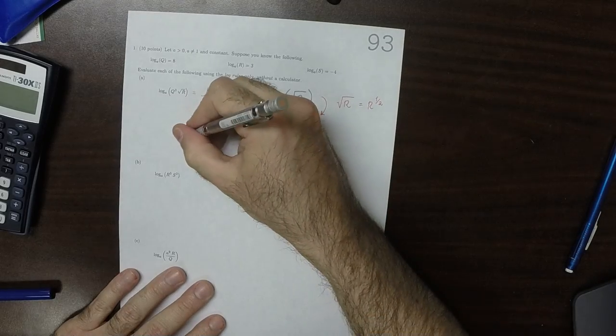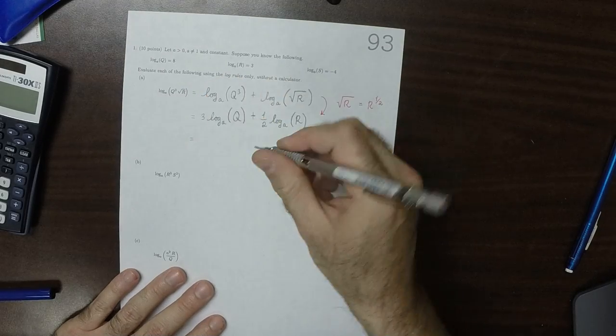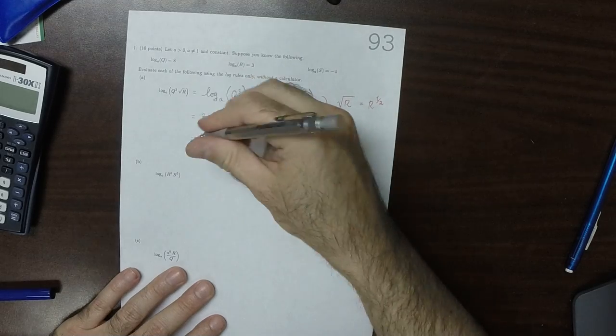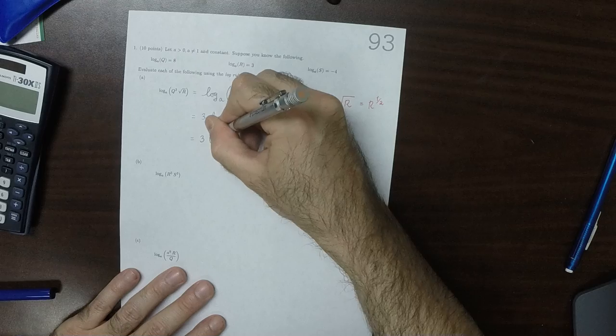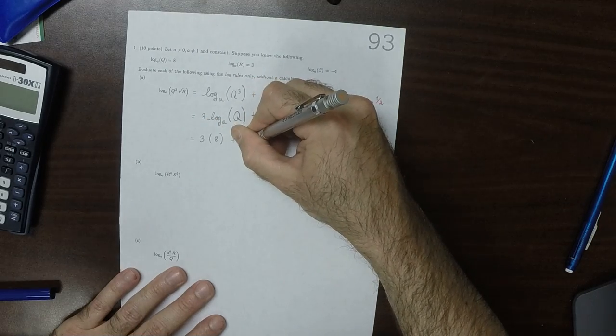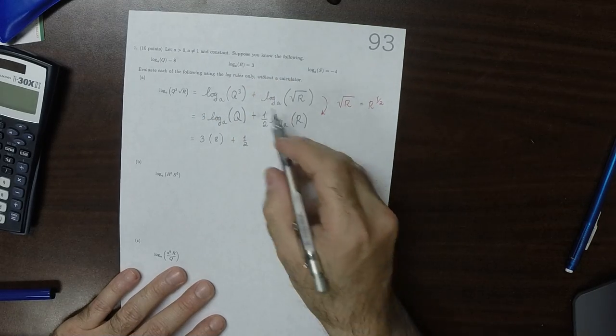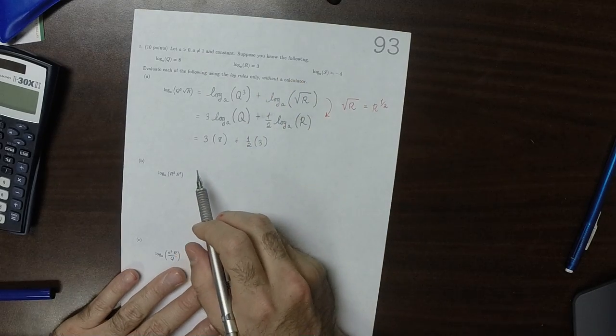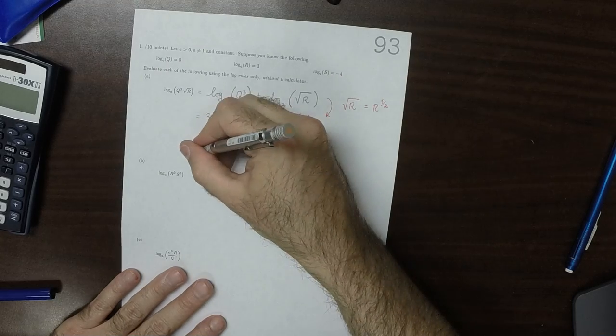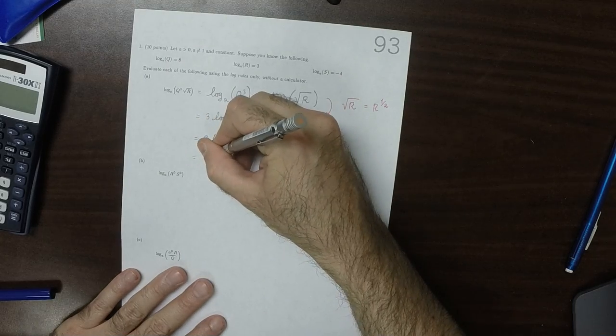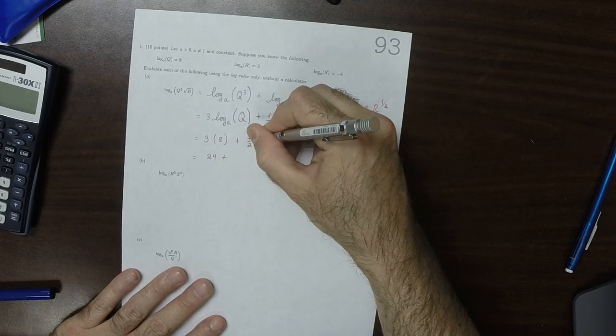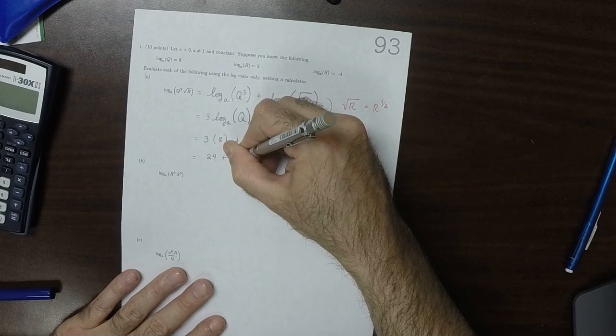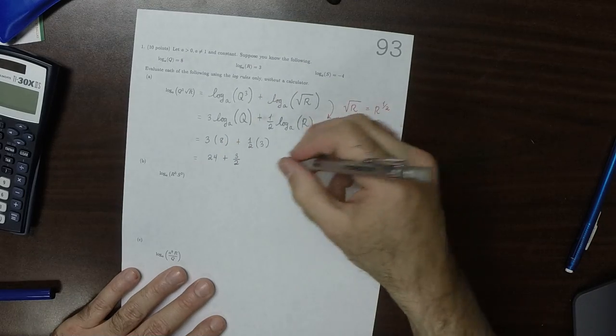But now we know each one of these individual components, so then that's 3 log base a of q is 8, and then plus half. Log base a of r is 3, so that's 24 plus 3 halves. So plus 1 and a half, that's 25 and a half.